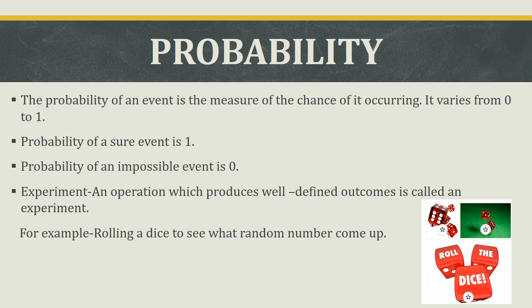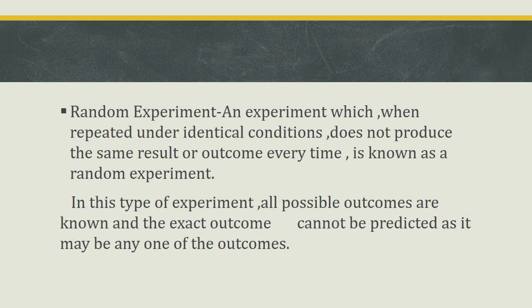An operation which produces well-defined outcomes is called an experiment. For example, rolling a dice to see what random number comes up. A random experiment is one which, when repeated under identical conditions, does not produce the same result every time. All possible outcomes are known, but the exact outcome cannot be predicted — such as tossing a coin, where either head or tail may come.